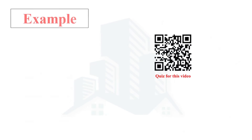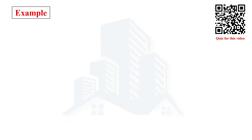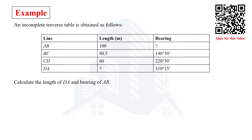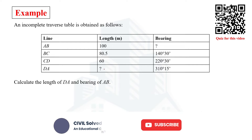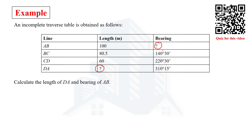To better understand this case, we are going to solve an example. In this example, there are four lines where the length of DE line is missing and the bearing of AB line is missing. We are asked to determine these using the concept of closed traverse.